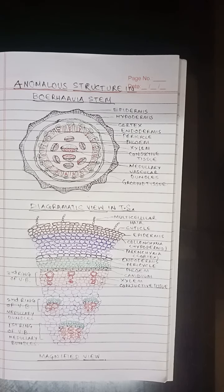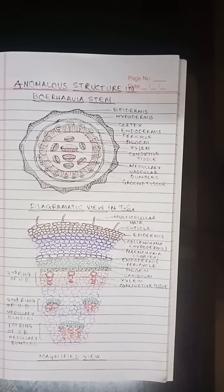The second or middle ring consists of six to fourteen vascular bundles. These bundles are smaller than those of the innermost ring. The bundles are conjoint, collateral, open, and endodermal. This ring also occurs in the pith, and hence the bundles are also called medullary vascular bundles.